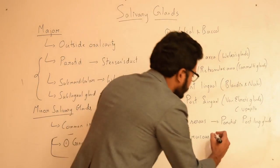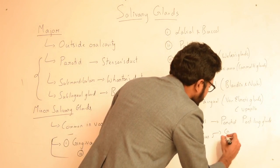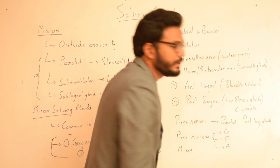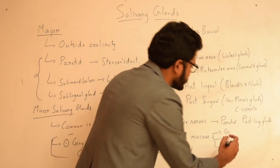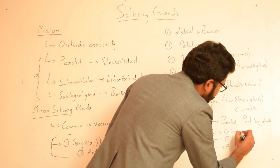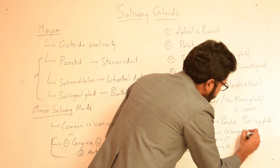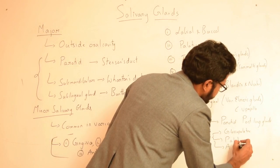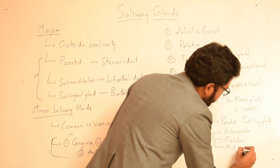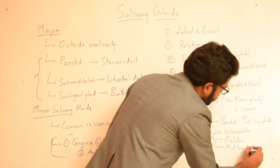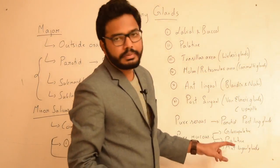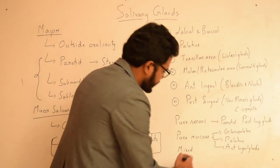For pure mucus glands, remember the mnemonic GPA. G stands for glossopalatin, P stands for palatine, and A stands for anterior lingual glands. So pure mucus — remember it as GPA.